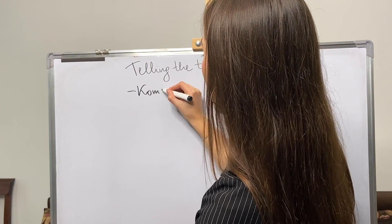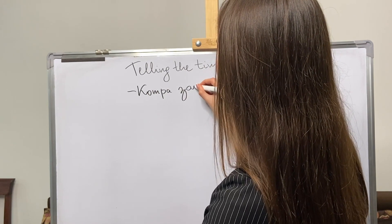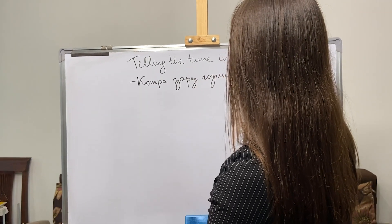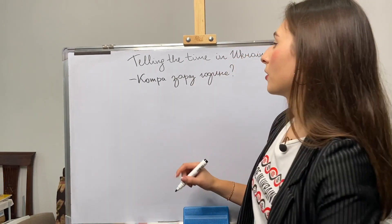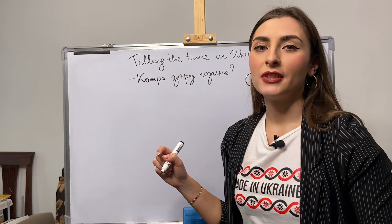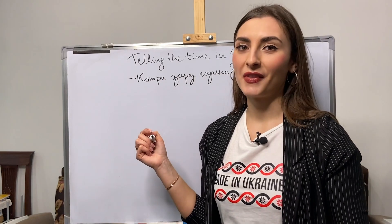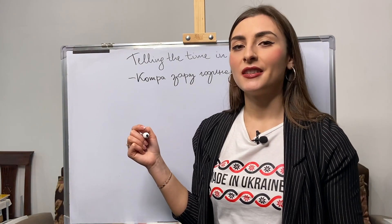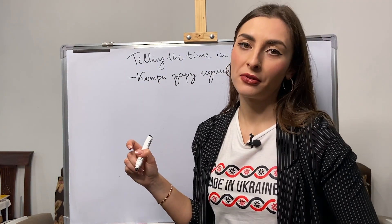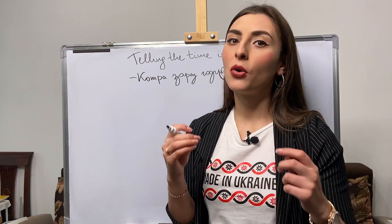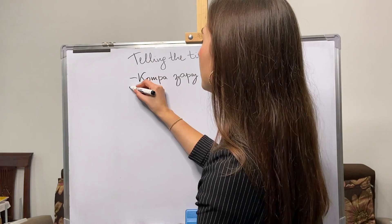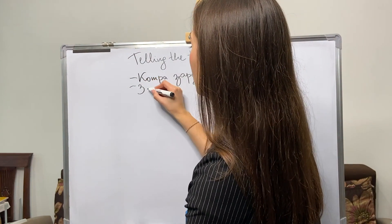«Котра зараз година?» I wrote it in the italic style. Would you please tell me — is it difficult for you to write this way? This is the letter T in Ukrainian language in the italic style, not M. «Котра», «котра». And then you answer: «зараз».